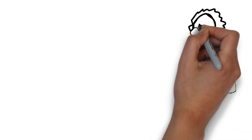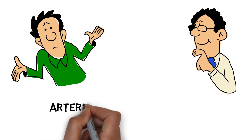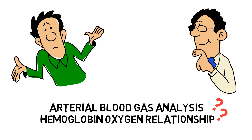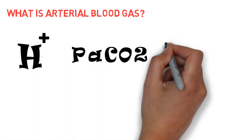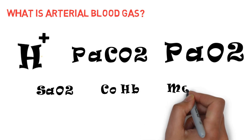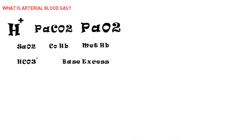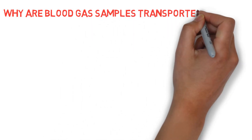Good morning Dr. Sagar. Good morning Praveen, how was your preparation for the exam? I have a few questions regarding arterial blood gas analysis and hemoglobin oxygen relationship. Sure, go ahead. What is arterial blood gas? The term arterial blood gas refers to measurements of hydrogen ion concentration, partial pressure of carbon dioxide, and partial pressure of oxygen in arterial blood. Measured values for hemoglobin saturation with oxygen, carboxyhemoglobin, and methemoglobin may be included. Many laboratories also report calculated values of oxygen saturation, bicarbonate concentration, and base excess. These measurements assess oxygenation, ventilation, and acid-base status.